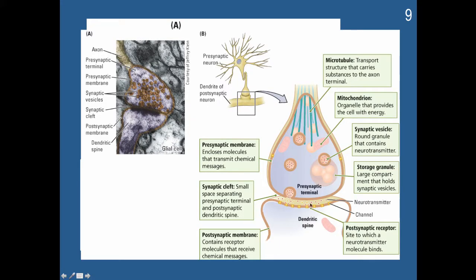Here's a larger example where you can see the cleft, the neurotransmitters released, the microtubules the vesicles travel down, a synaptic vesicle, and a large storage granule holding several together. The action potential travels down and stimulates the release of neurotransmitters into the synaptic cleft via exocytosis. Once released from the presynaptic membrane, neurotransmitters are received at the postsynaptic membrane on receptors, which can then let ions into the cell, resulting in an IPSP or EPSP.